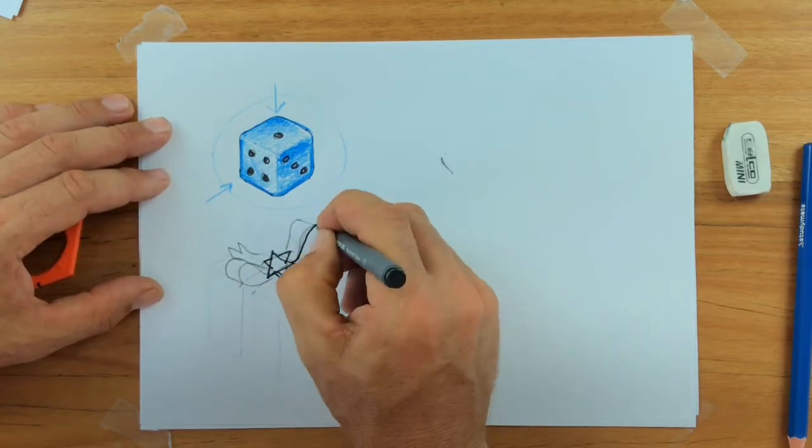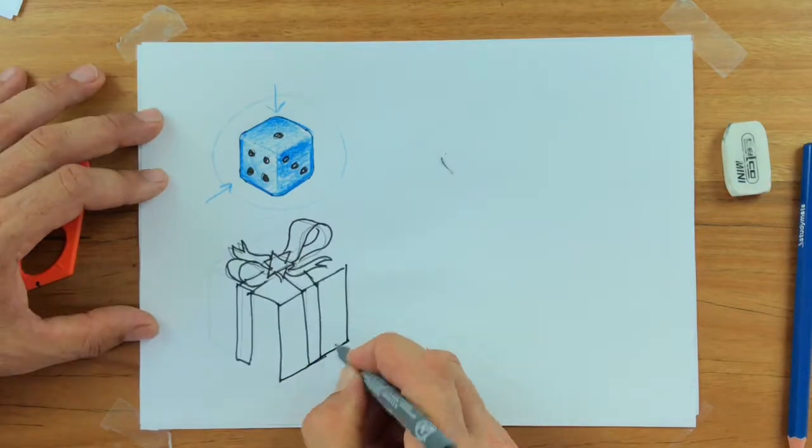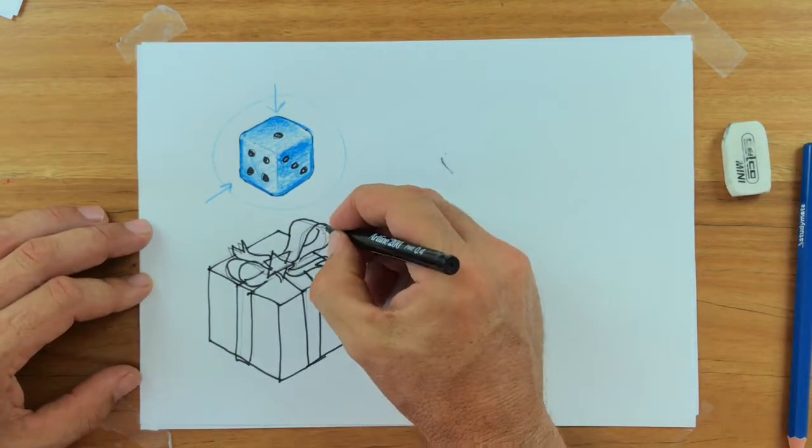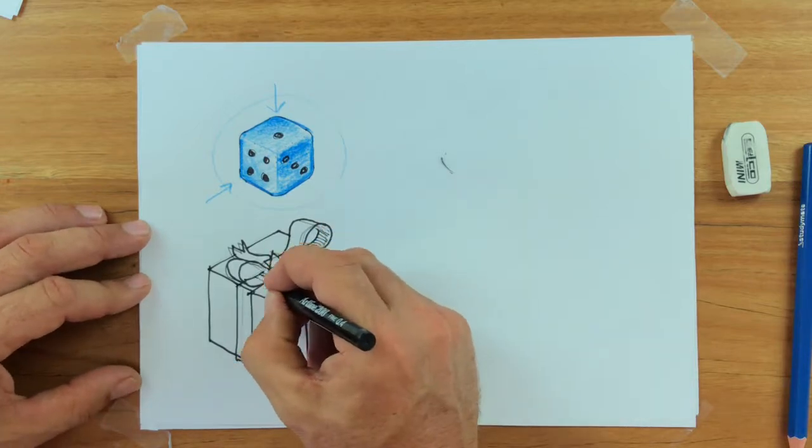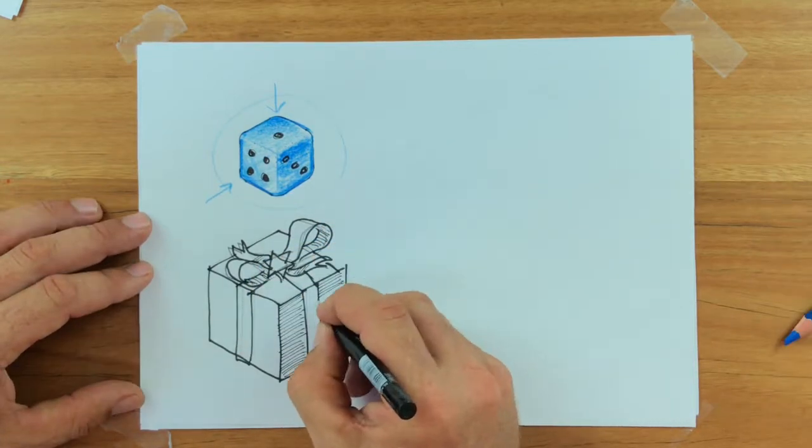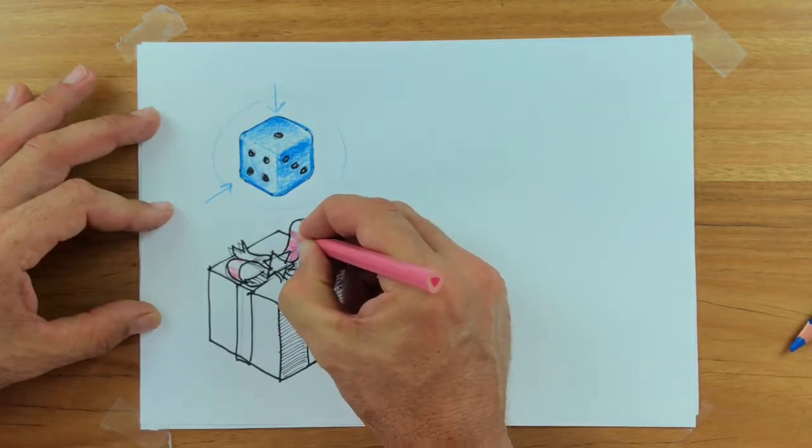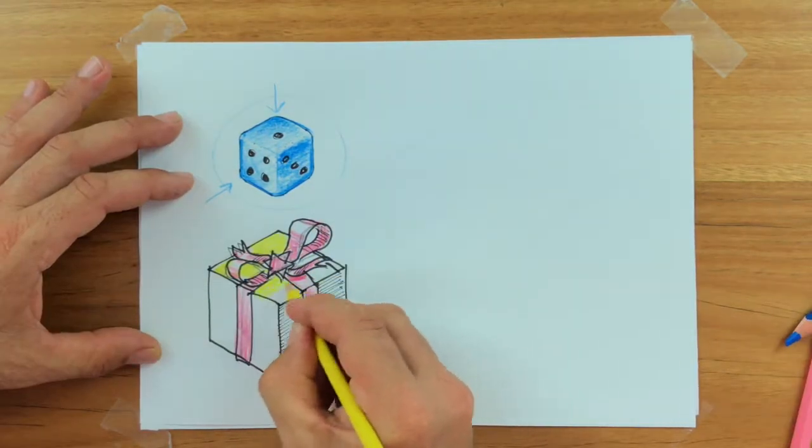I'm using a felt tip to trace over my pencil and then I'll rub out the pencil when it's dry. Trace the outline. I'm using a thinner felt tip to do shading and shadows. A little splash of colour really brings up a drawing.